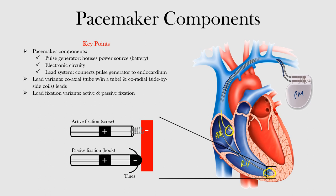If active, the cathode has an electrically active tip that is inserted into the myocardium for mechanical stability. If passive, the cathode is not inserted into the myocardium. Instead, electrically inert tines anchor the leads.